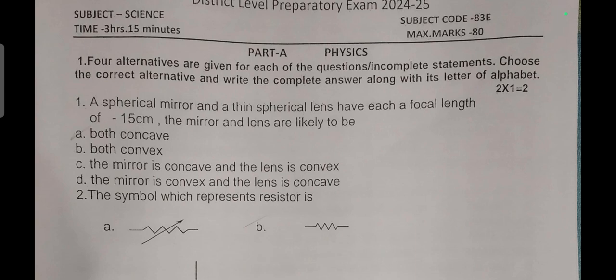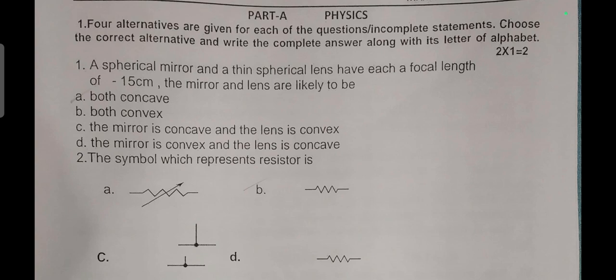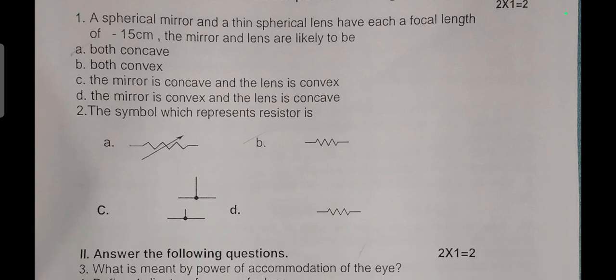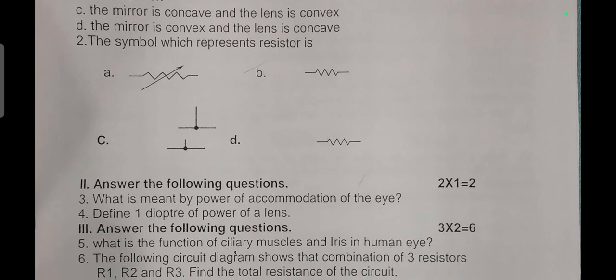Part A: Physics. Two multiple choice questions. A spherical mirror and a thin spherical lens each have a focal length of minus 15 centimeter. The mirror and lens are likely to be both concave. Answer is A. Second question: the symbol which represents the resistor.